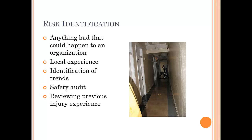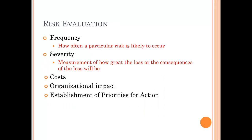It's really important to review your previous injury experience. If your department has had 20 back injuries a year and that number stays constant, maybe we're doing something wrong. Frequency is how often a particular risk is likely to occur; severity is how great the loss or consequences will be. There are always costs associated with risk — equipment damage, employee costs including days off or inability to return to work. We must establish priorities for action.